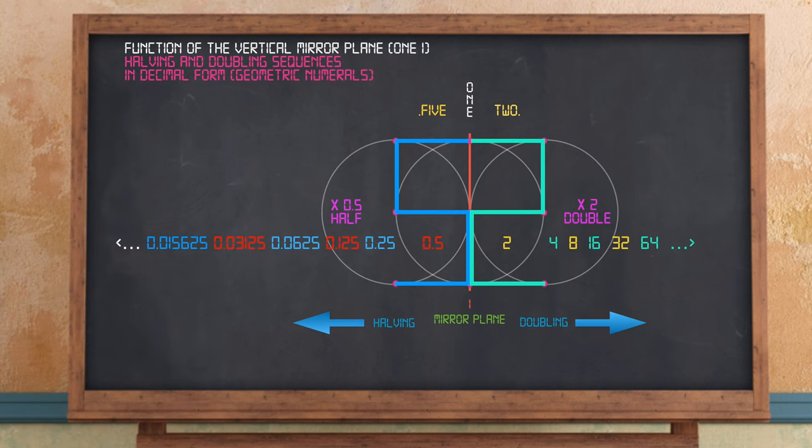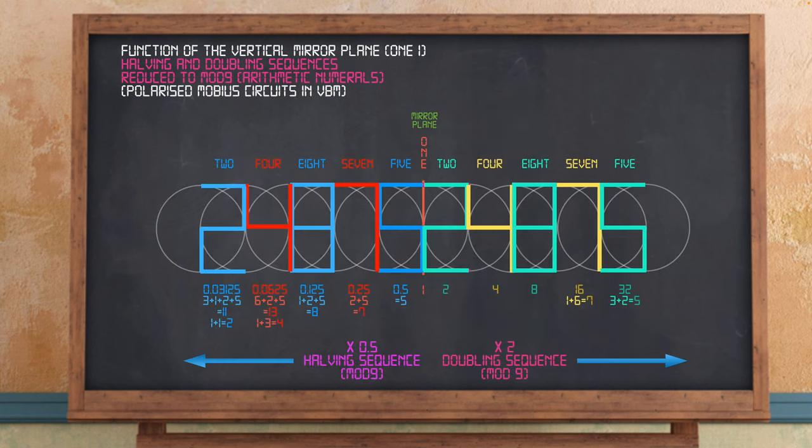If we continue the polarized sequence of doubling and halving we get the following sequences of numbers. If you've been following my vortex based maths series you'll likely be familiar with these sequences already as the doubling and halving sequences that can be obtained from the Mobius strip of the upper cipher. If we reduce all of these numbers back to their mod 9 roots as shown using the reduction through addition of the digit equations below the numbers we obtain the polarized mod 9 doubling and halving sequences of VBM 1, 2, 4, 8, 7, 5 and 1, 5, 7, 8, 4, 2.